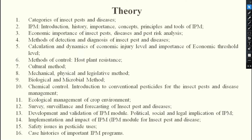Continuing with the sixth outline, we will discuss mechanical, physical, and legislative methods, then biological and microbial methods, then chemical control including classification and all aspects of chemical control, ecological management, and cultural methods. We will also cover survey, surveillance, and forecasting of insect pests and diseases.